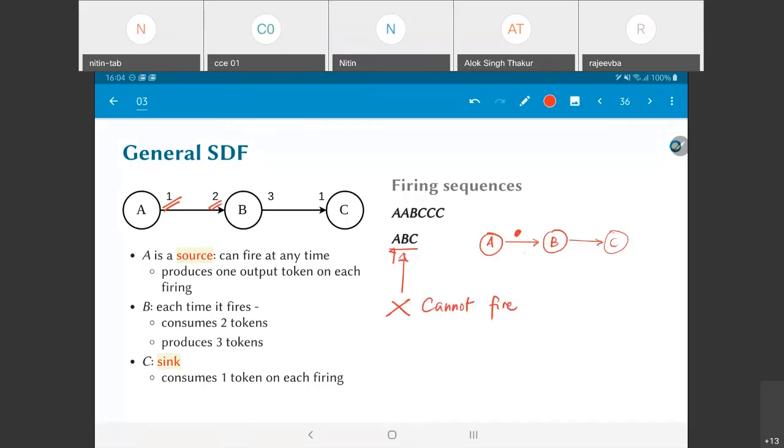According to what I've written, the next thing that should happen is B should fire, but this cannot happen because at least two tokens must be present on this edge.